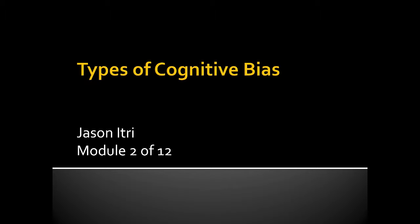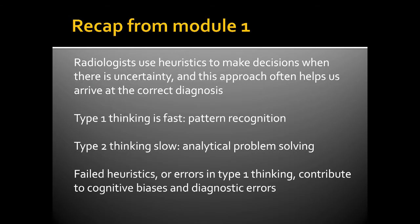Welcome to the second module of this series, Types of Cognitive Bias. To recap from the prior module, radiologists use heuristics to make decisions when there is uncertainty, and this approach often helps us arrive at the correct diagnosis.